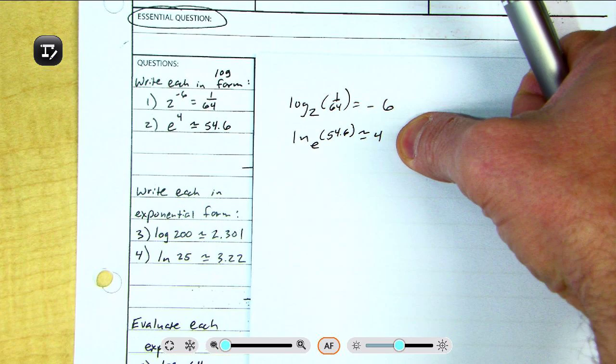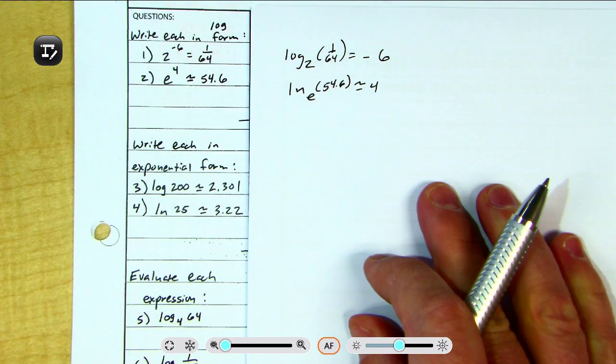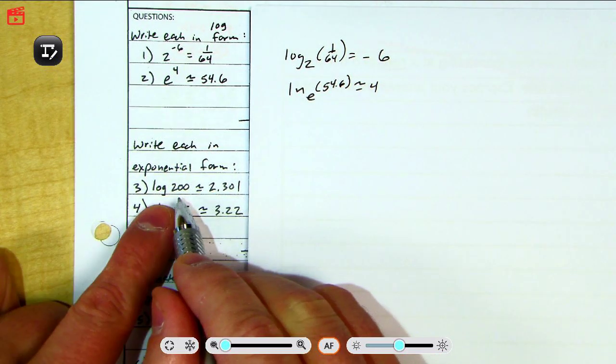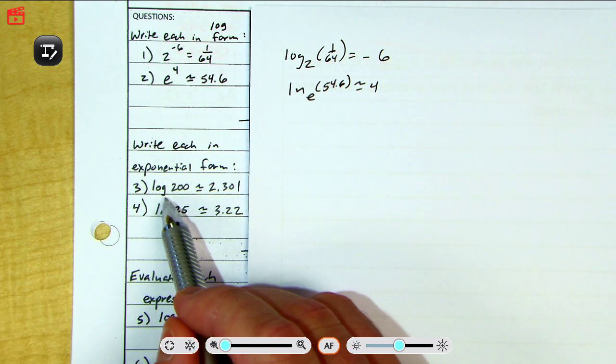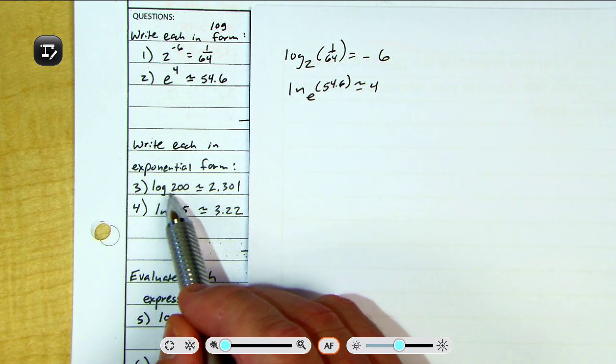Now, the same thing goes the other direction. If I start with logarithmic and going to exponential, personally, I think this is easier. What is the base right here? It's unwritten. What is it? Does anybody remember from the reading? It's a 10. That's right. This is called common log.